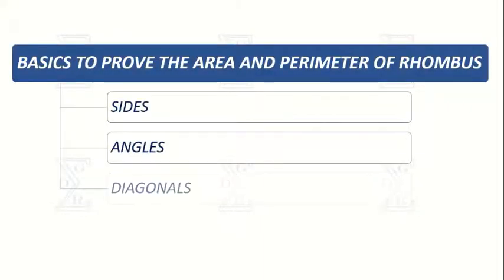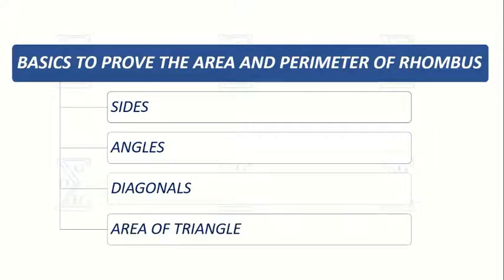Sides, angles, and diagonals of a rhombus. And to prove the area of rhombus we use the area of triangle.